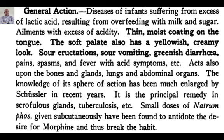Phosphorus itself is a tubercular element, so Natrium phosphoricum becomes useful in tubercular diathesis because of the phosphorus component. Small doses of Natrium phosphoricum given subcutaneously have been found to antidote the desire for morphine and thus break the habit — this is clinical experience shared in the literature; Schussler recommends 6x either in trituration or dilution as the proper potency, based on the relative proportion of the salt in the blood.